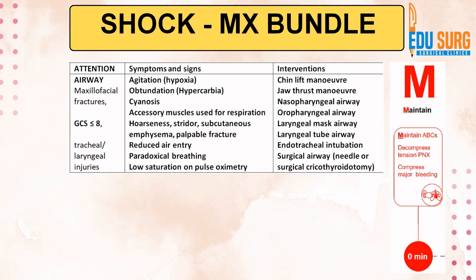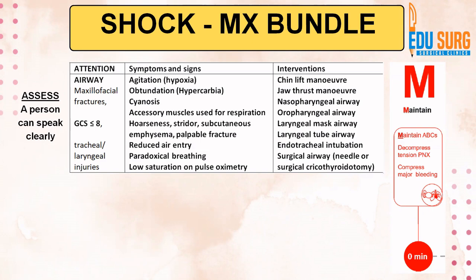When we look at airway, it needs attention especially in cases of maxillofacial fractures, or when the Glasgow Coma Score is less than or equal to 8, or when you are suspecting laryngeal or tracheal injuries. A very simple way to assess the airway is if the person can speak clearly — usually the airway is intact. Ask the person where they are, what their name is. If they can answer without feeling breathless or any issues, the airway is intact.